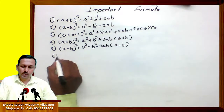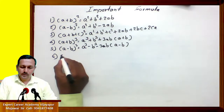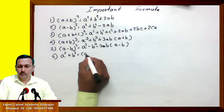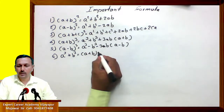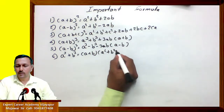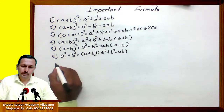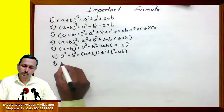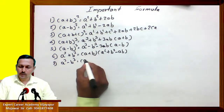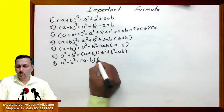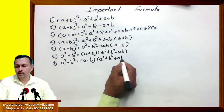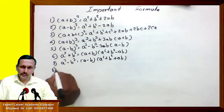Sixth one: a cube plus b cube equals (a plus b) into bracket (a square plus b square minus ab). Seventh one: a cube minus b cube equals (a minus b) into bracket (a square plus b square plus ab). Eighth one,